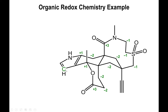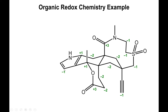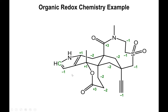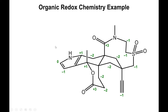Looking at another carbon with three bonds: it must have one hydrogen, and the C–C bonds are ignored. That one hydrogen decreases the charge to −1. Over here, a carbon has two bonds to carbon (ignored), one bond to hydrogen (−1), and one bond to nitrogen (+1). Minus one plus one gives zero — so this carbon has a neutral charge.